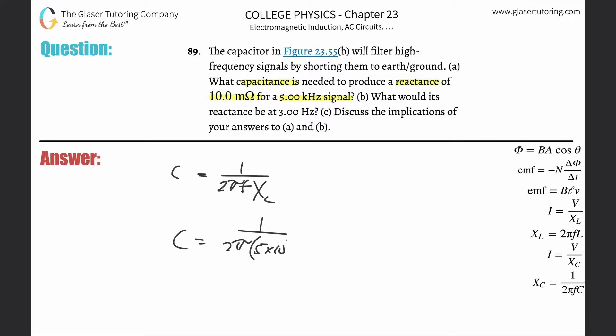Reactive capacitance here, they told us was 10 milliohms, but we need that in ohms. So take 10 and multiply it by 10 to the minus 3. Basically these two will cancel, so it's basically just 1 over 2 pi times 5 times 10, and then plug that into the calculator.